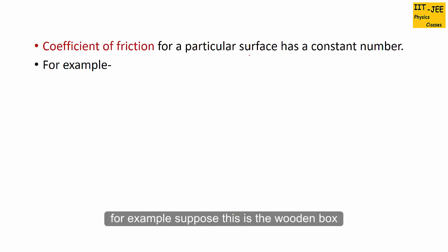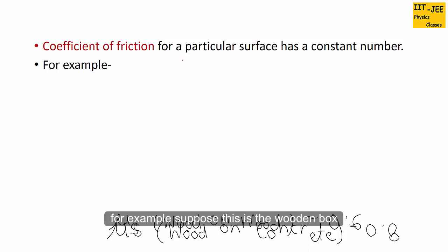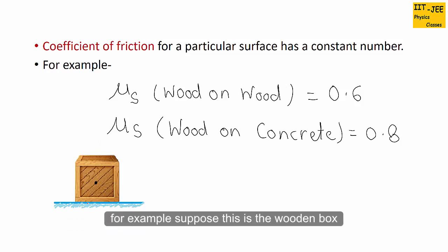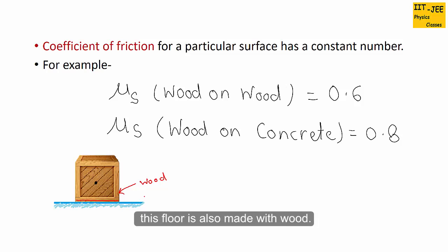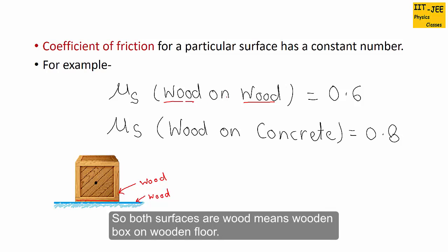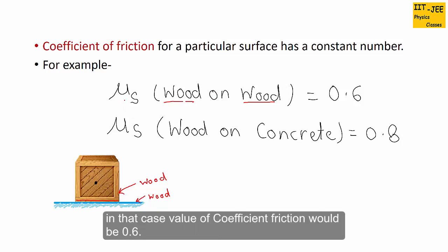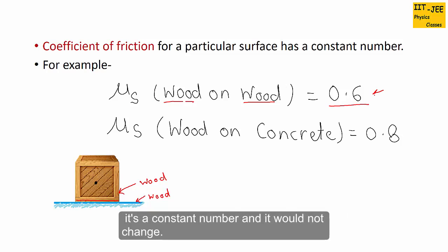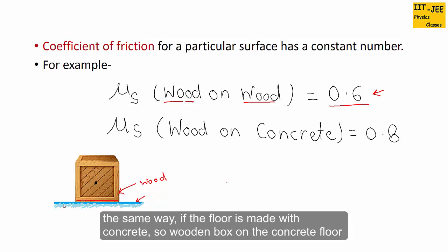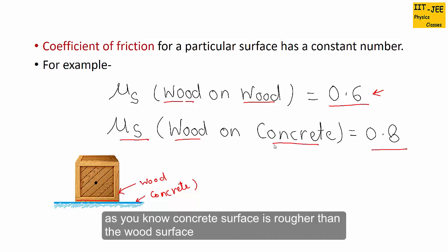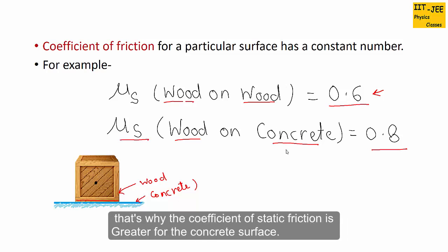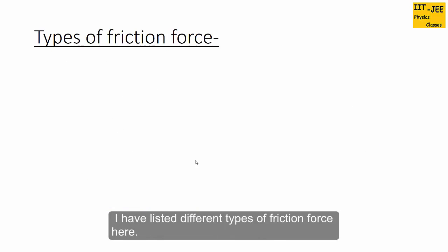The coefficient of friction for a particular surface is a constant number. For example, consider a wooden box on a wooden floor — both surfaces are wood, so the coefficient of friction is 0.6. If the floor is made of concrete — wooden box on a concrete floor — the coefficient of friction for wood on concrete is 0.8. Since concrete is rougher than wood, the coefficient of static friction is greater for the concrete surface.